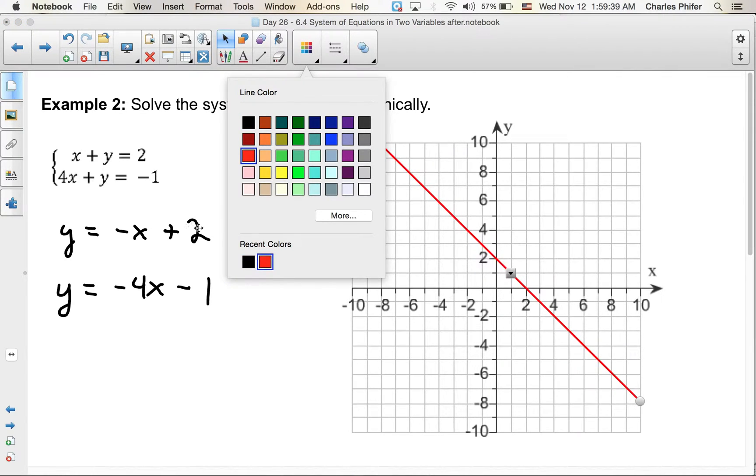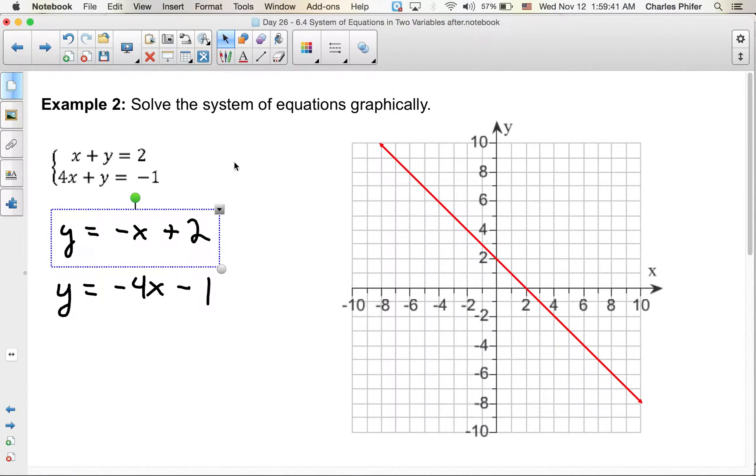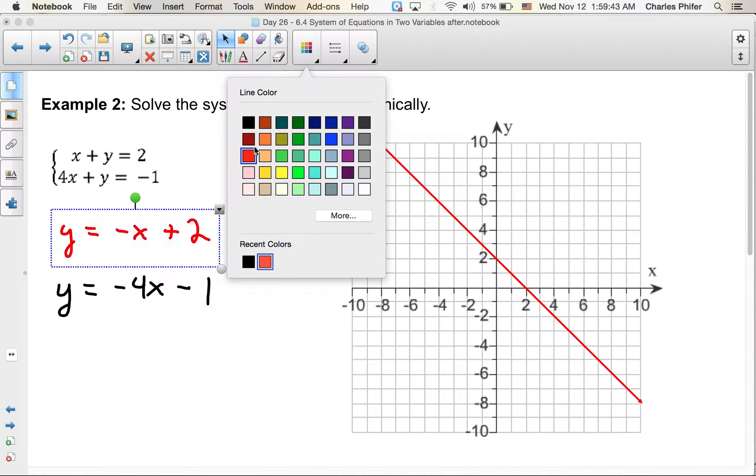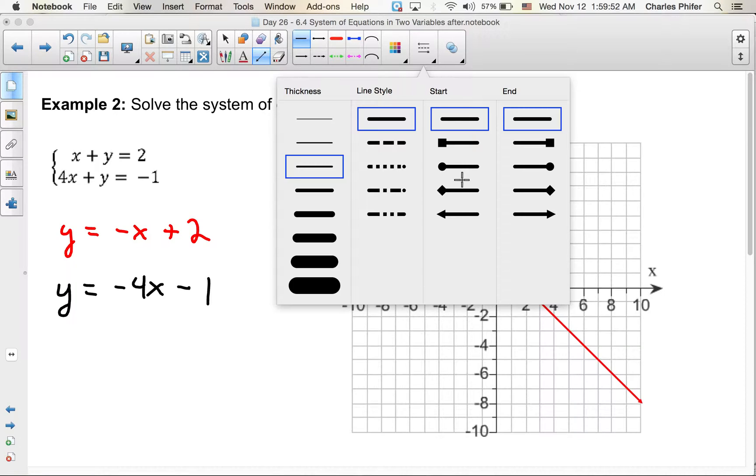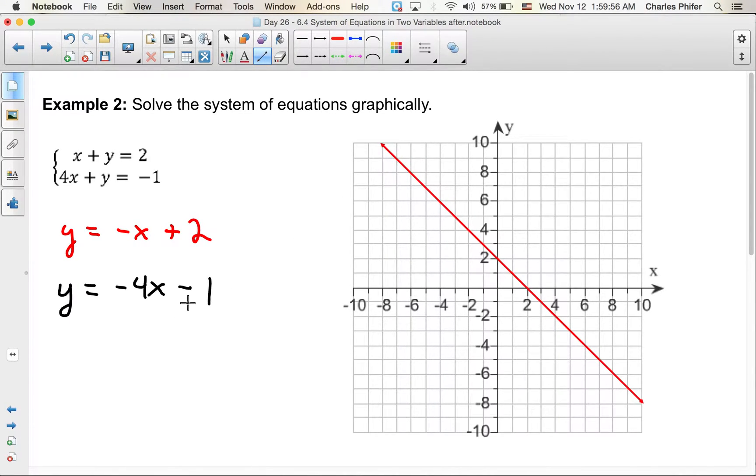This would be the red one. The other one we'll leave as black. So this one, we will start at negative 1 and do a slope of negative 4.